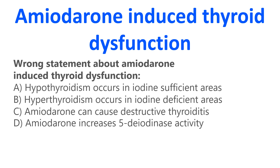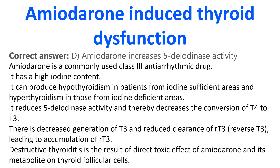Wrong statement about amiodarone-induced thyroid dysfunction: A. Hypothyroidism occurs in iodine sufficient areas. B. Hyperthyroidism occurs in iodine deficient areas. C. Amiodarone can cause destructive thyroiditis. D. Amiodarone increases 5-deiodinase activity. The correct answer is D: Amiodarone increases 5-deiodinase activity.